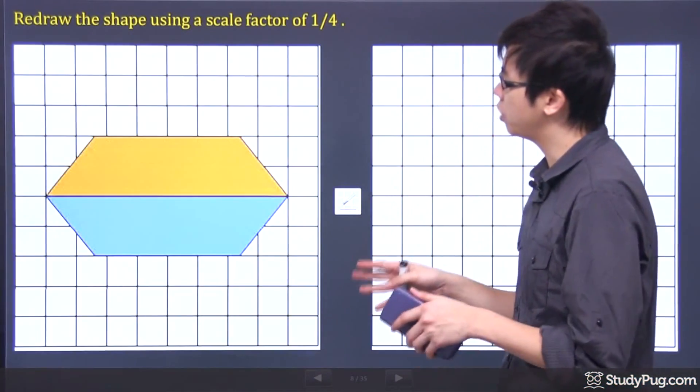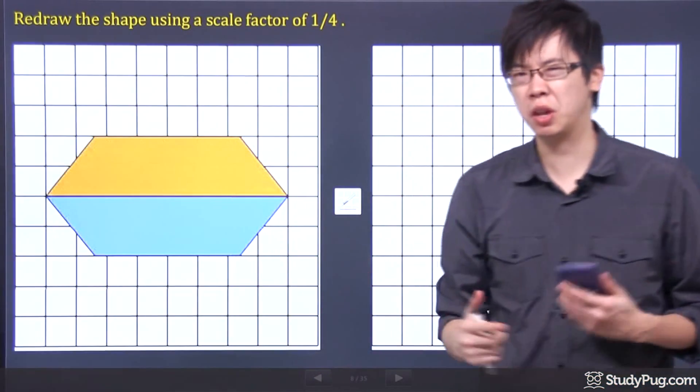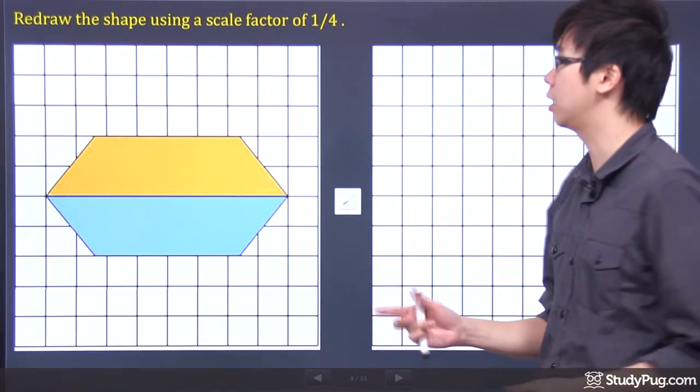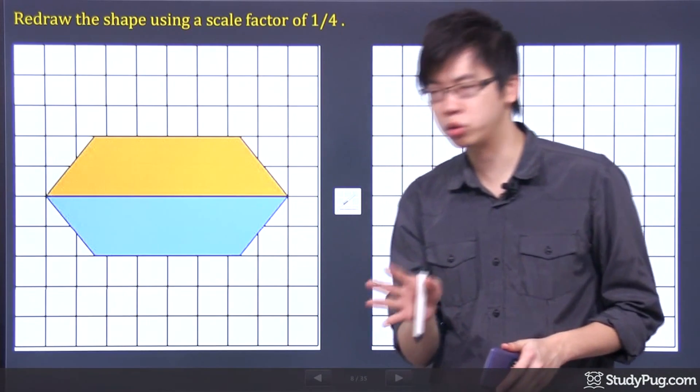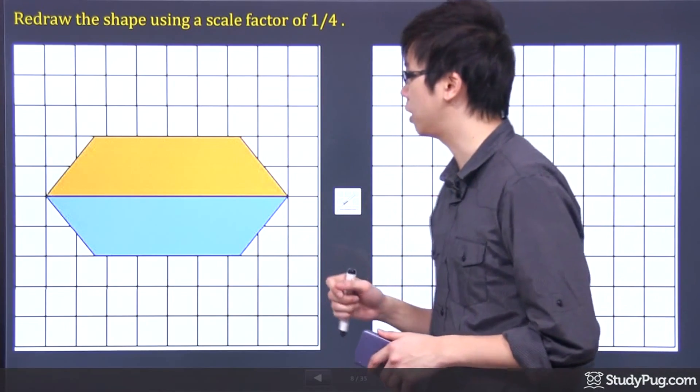Hi, welcome to this question. We're trying to redraw this shape using a scale factor of 1/4. So it's going to get smaller, but how much smaller? About a quarter smaller, right?